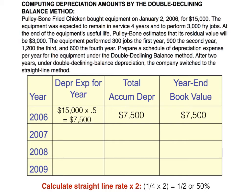In year two, we take 50% of the beginning book value, which was $7,500 from the prior year. So 50% of $7,500 gives us $3,750 in depreciation expense. Total accumulated depreciation becomes $7,500 plus $3,750, equaling $11,250. Our year-end book value at the end of year two is therefore $3,750 — we started with $15,000 and have depreciated a total of $11,250.